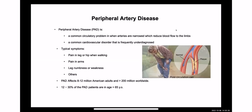About peripheral artery disease: it's a common circulatory problem where the arteries get narrowed and blood flow to the limbs is reduced. It's one of the common cardiovascular disorders that is undiagnosed, because typical symptoms are not reported by patients — symptoms can be pain in the leg or hip when walking, pain in arms, or leg numbness. PAD affects 8 to 12 million American adults and more than 200 million worldwide.